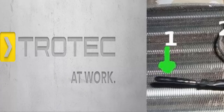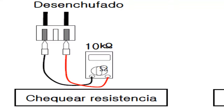For the Trotec brand, Error E3 is due to an issue with the evaporator's temperature sensor. For problems with the temperature sensor, it is recommended to disconnect it and measure its resistance with a multimeter. Its value should match the one indicated in the manual and should never be infinite.